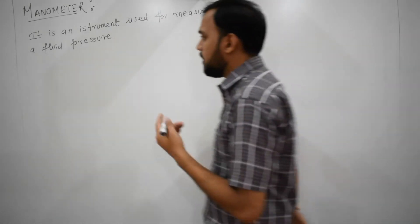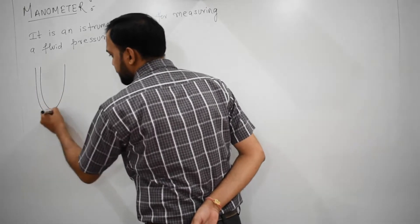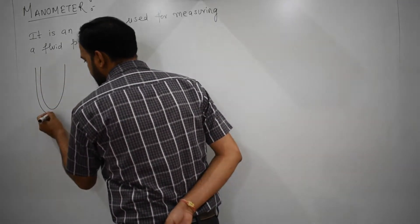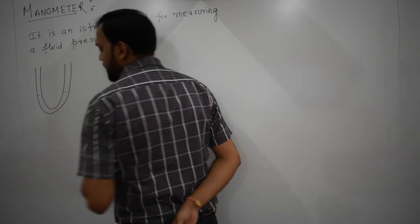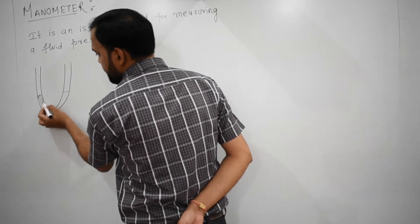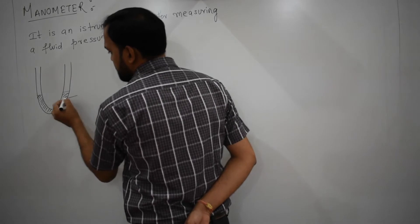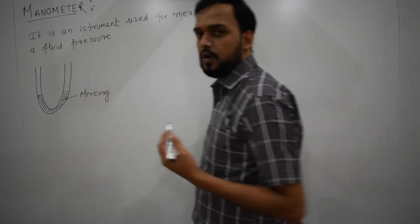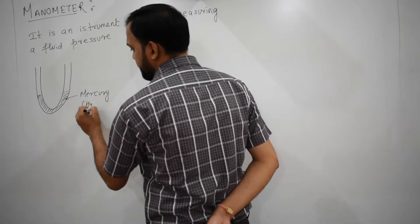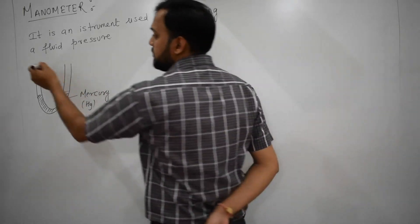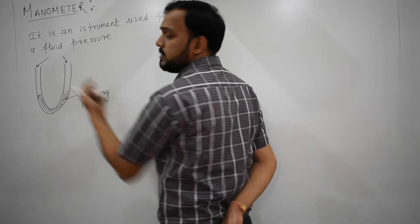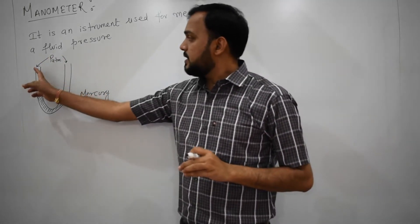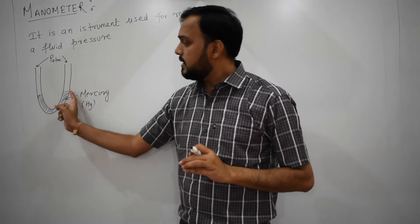Let's talk about how the manometer works. The manometer is a U-shaped tube filled with a dense liquid. This dense liquid is mercury. The symbol of mercury is Hg. This end is open from here, and this end is also open from here, so both ends are open. It means both places will have atmospheric pressure. So this is your atmospheric pressure. As the pressure at both ends is the same, you can't see a difference in the mercury level.